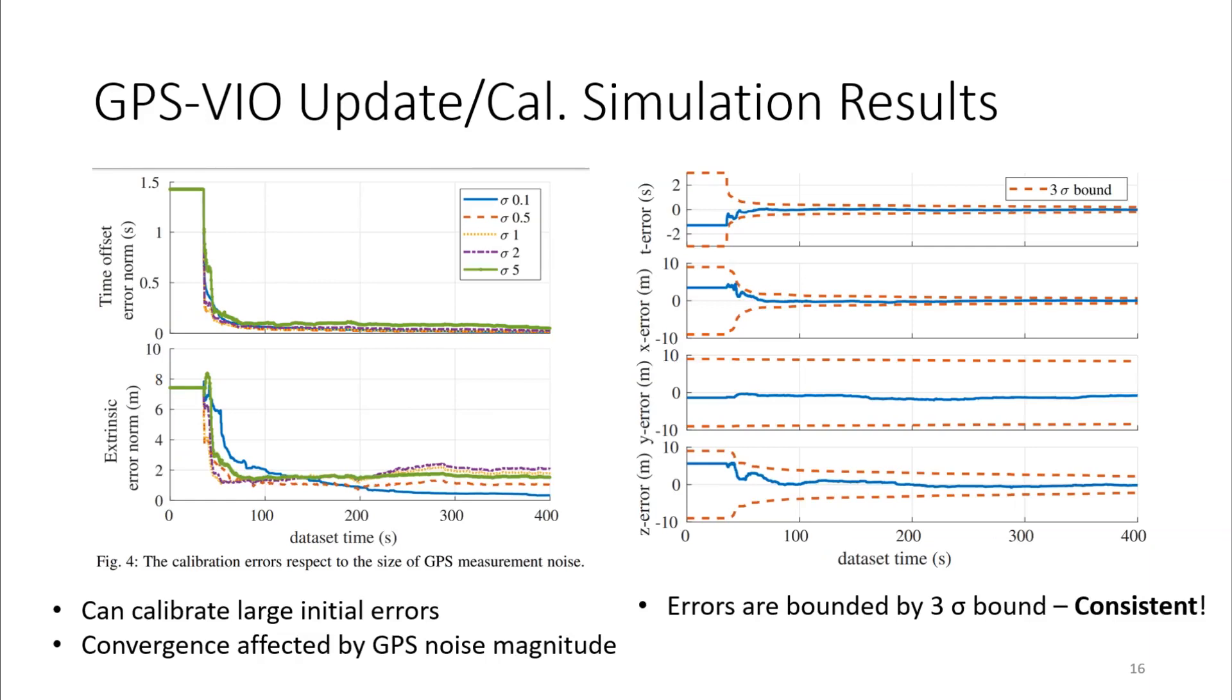The calibration converges near zero even with large initial errors, such as 1.5 seconds of time offset and around 8 meters of position errors depending on different GPS noise levels. The right side of the figure shows the error of calibration parameters and its 3-sigma bounds, showing the consistency of the proposed method.